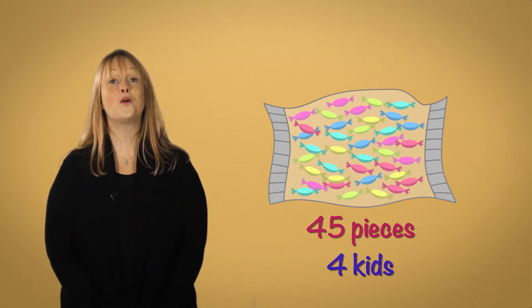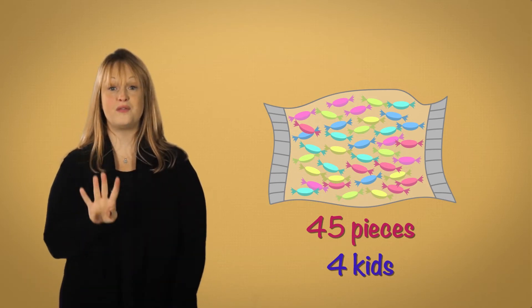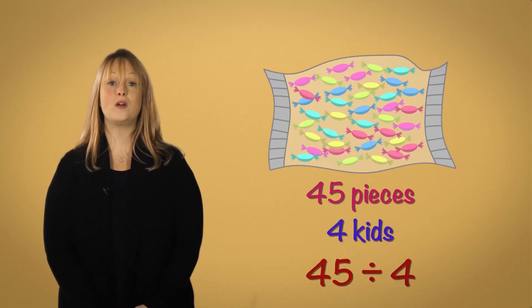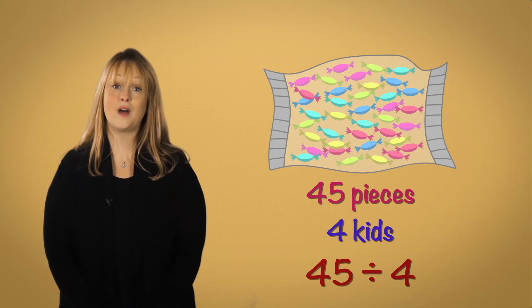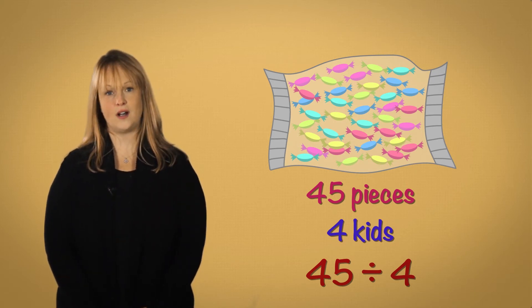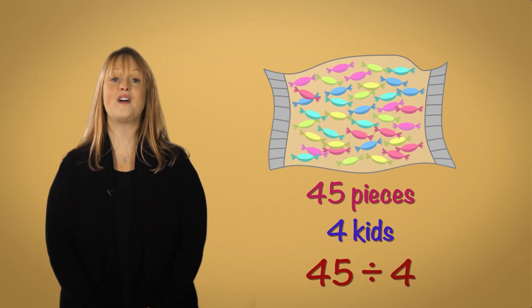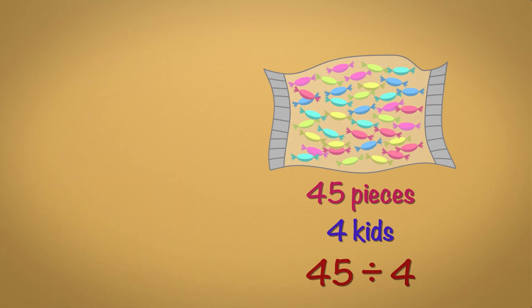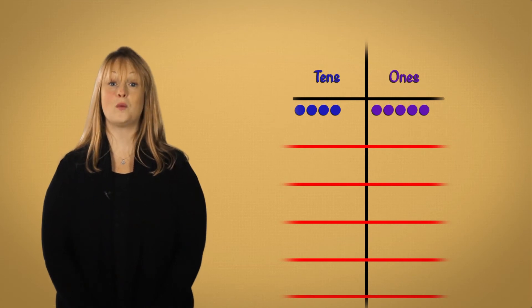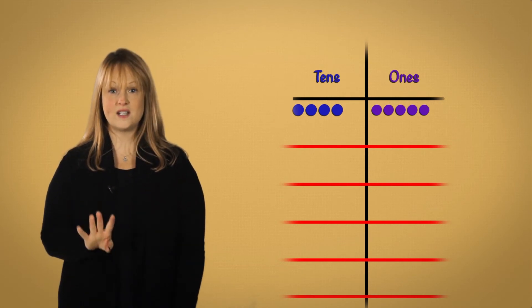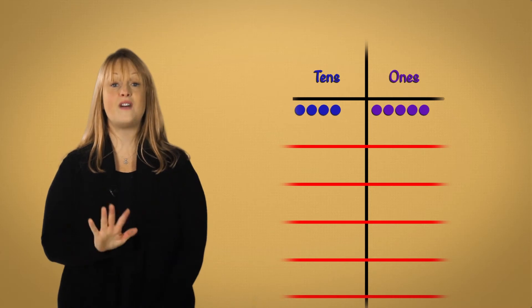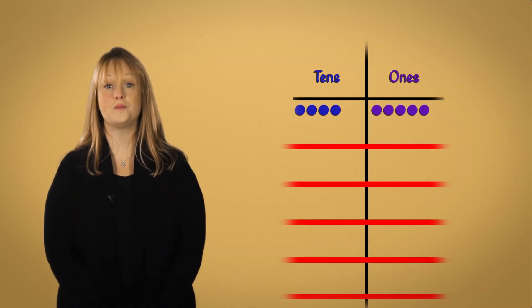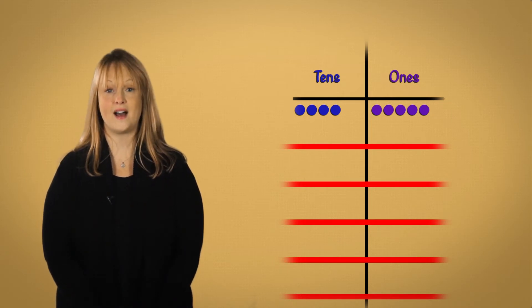Great. 45 is our whole. And we want to make groups of four. So 45 divided by four is our equation. Now I want to model this in a place value chart. Which of these represents 45 divided by four? Here is a place value chart with 45 represented. Four discs are in the tens place. Five discs are in the ones. And then we have four groups made below to represent the four bags. That means we're dividing by four.